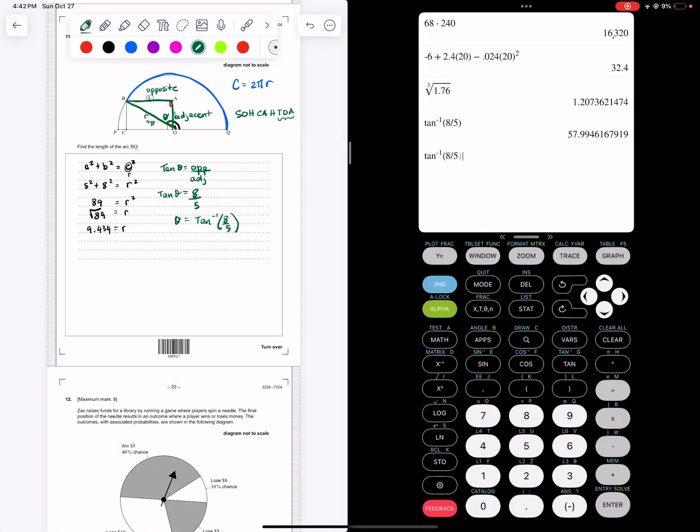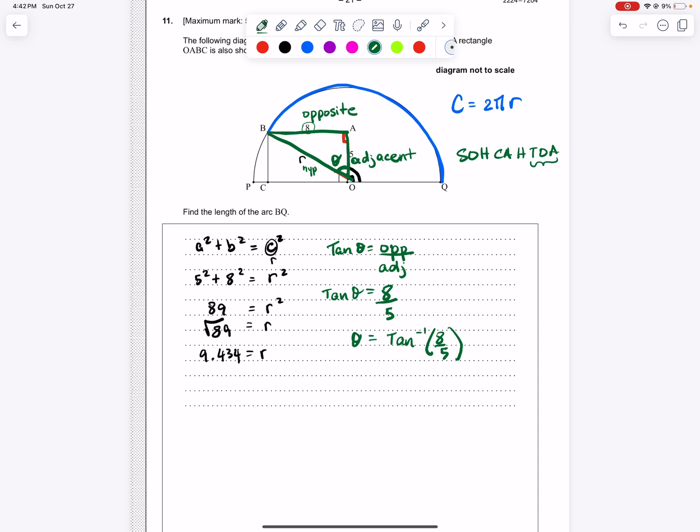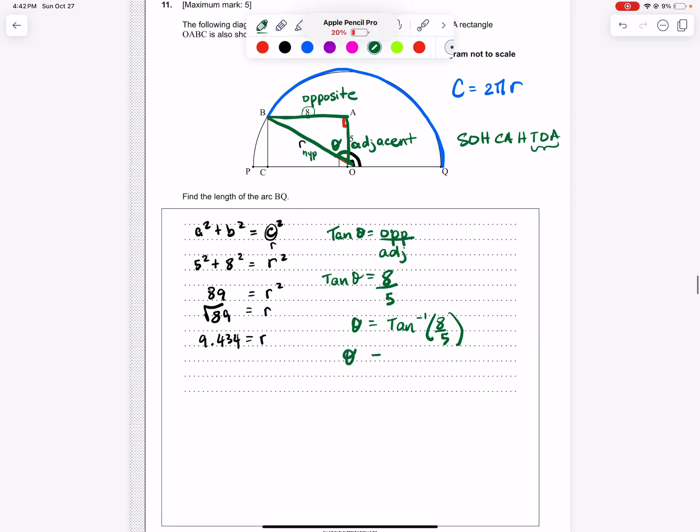In order to find that angle, we have to do the inverse tan, or the second tan of 8 over 5. In our calculator, we press second tan, and then 8 over 5. When we enter that, we get 57.99, which really truly is 58 to three significant figures. So theta equals 58 degrees.